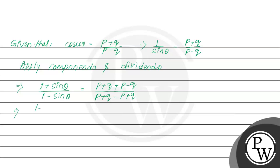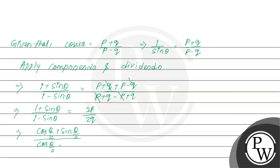That implies 1 plus sin theta divided by 1 minus sin theta equals — here the q terms cancel out and the p minus p terms cancel — so we have 2p divided by 2q. That implies we can write it as: cos theta by 2 plus sin theta by 2, divided by cos theta by 2 minus sin theta by 2, whole square equals p by q.